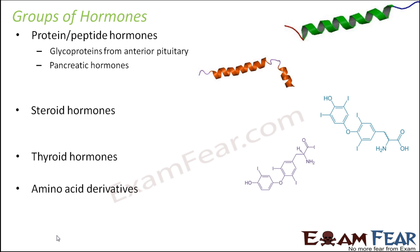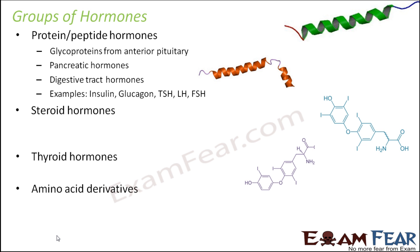Those hormones which have cholesterol grouped with them are steroid hormones, and those which have some amino acid in them are amino acid derivatives. So they are grouped based upon their structure. The digestive tract hormones also fall under protein hormones. Examples of protein hormones include insulin, glucagon, thyroid stimulating hormone, luteinizing hormone, and follicle stimulating hormone.